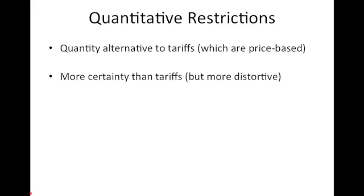One of the advantages from a government standpoint of a quota or quantitative restriction as opposed to a tariff is that it provides more certainty. When you limit the quantity that can come in, you know exactly how much is going to be able to come into the country, barring smuggling. A tariff, on the other hand — if importers pay the tax at the border, they can bring the product in — so you really don't know with certainty what the number of goods coming into the market will be, and therefore don't know what the pressure will be on your domestic producers.